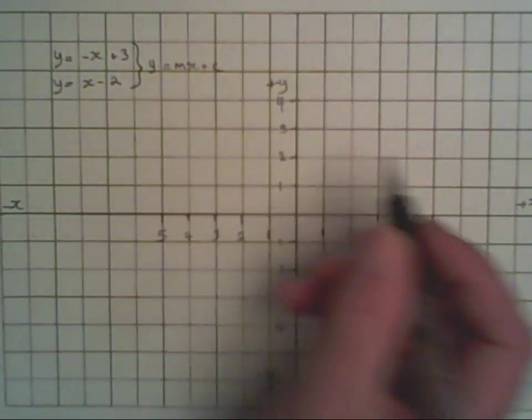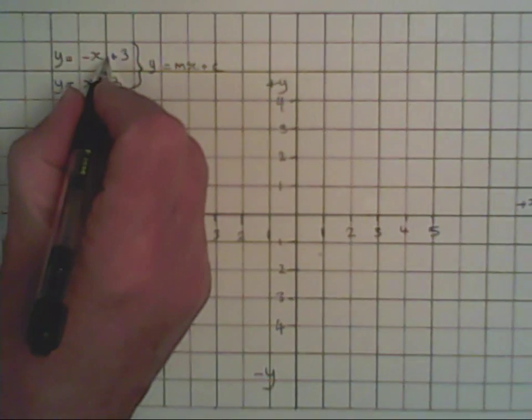So we know one position for the line already. That is, in this case, plus 3. And therefore I can instantly choose the coordinate for part of the line. The line will go through that particular place there.